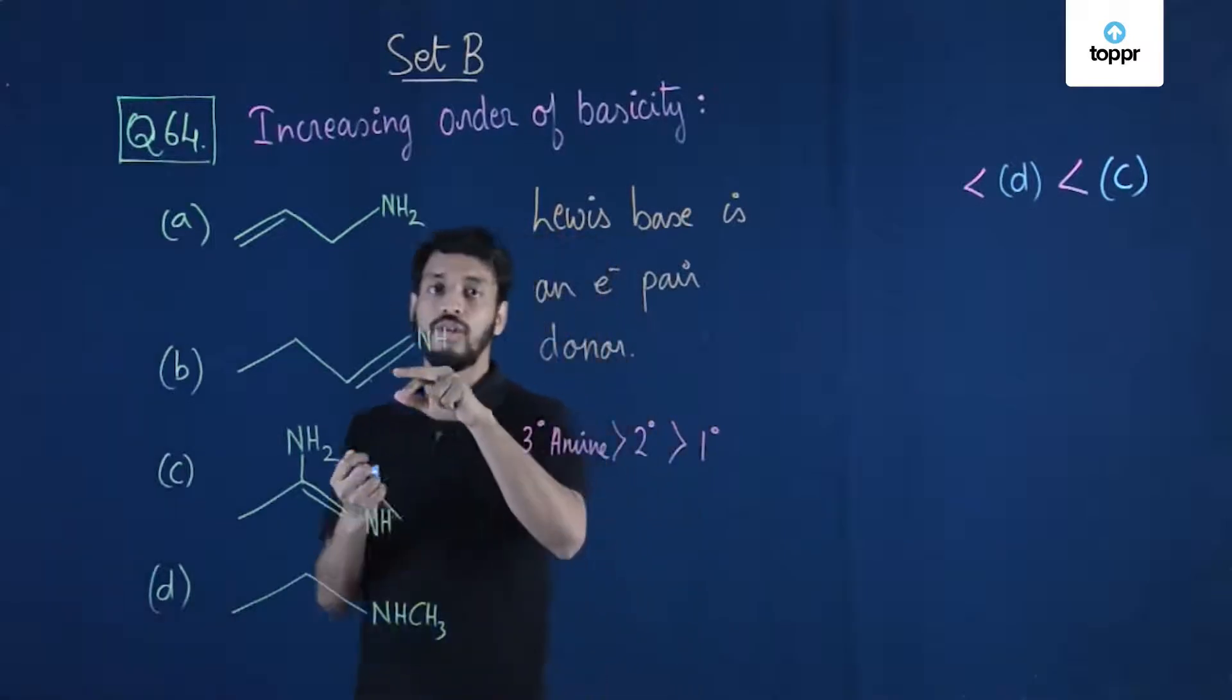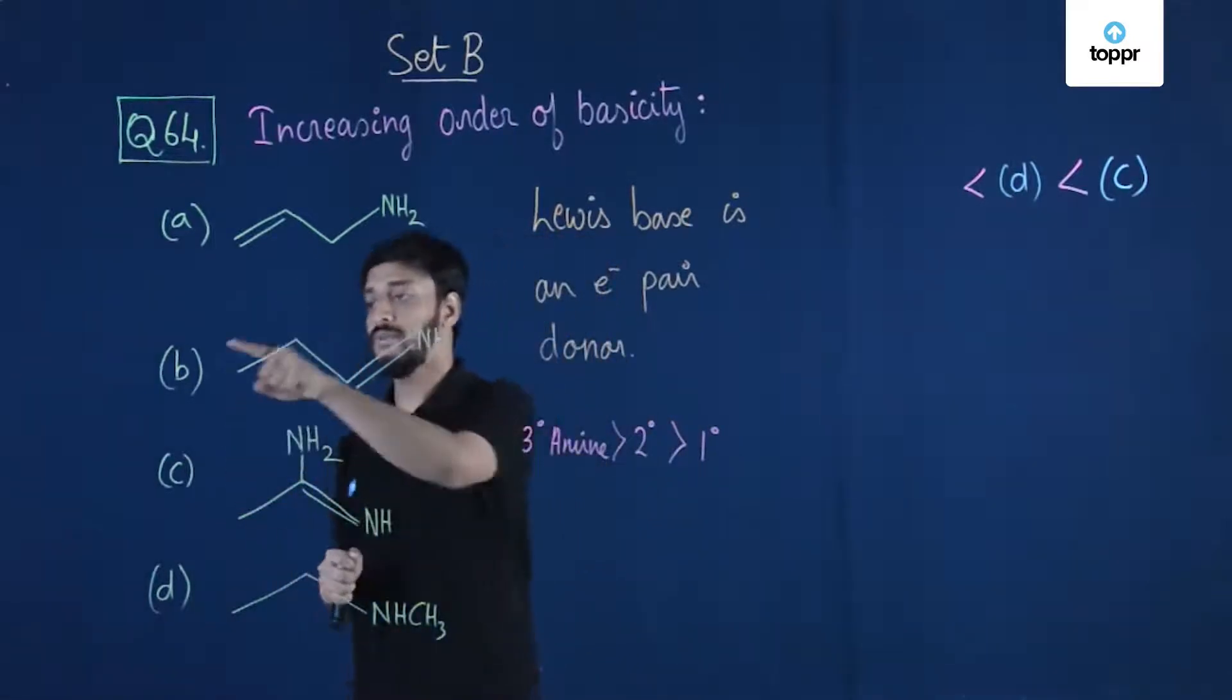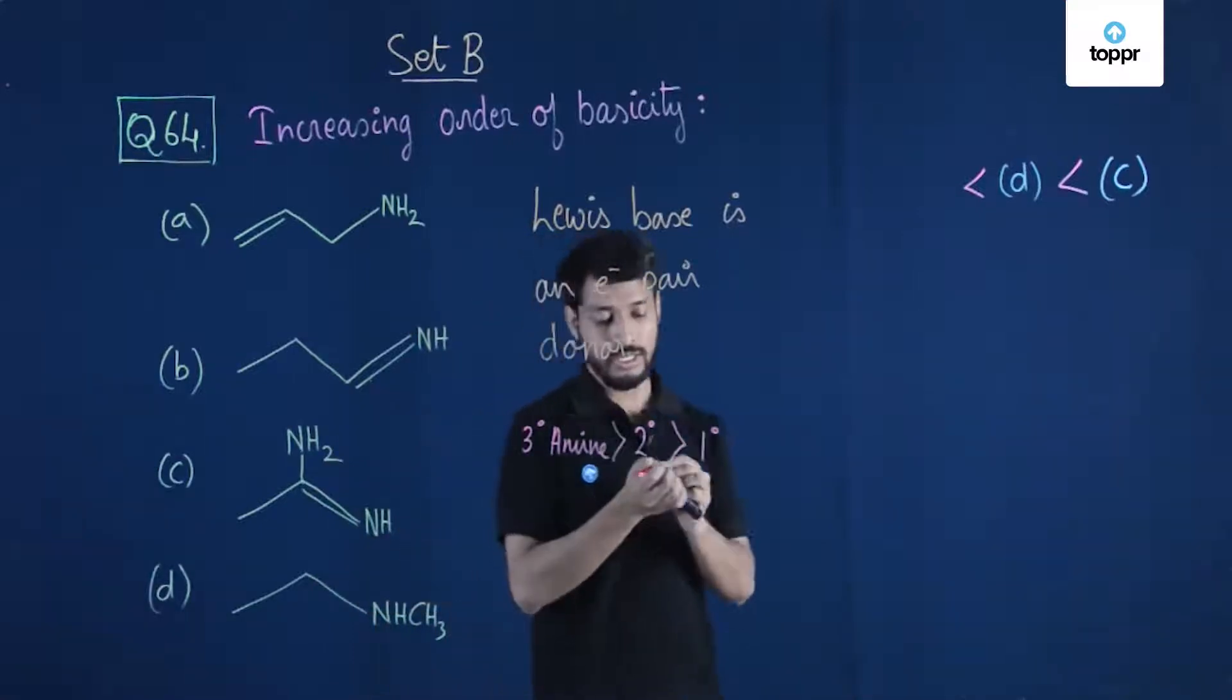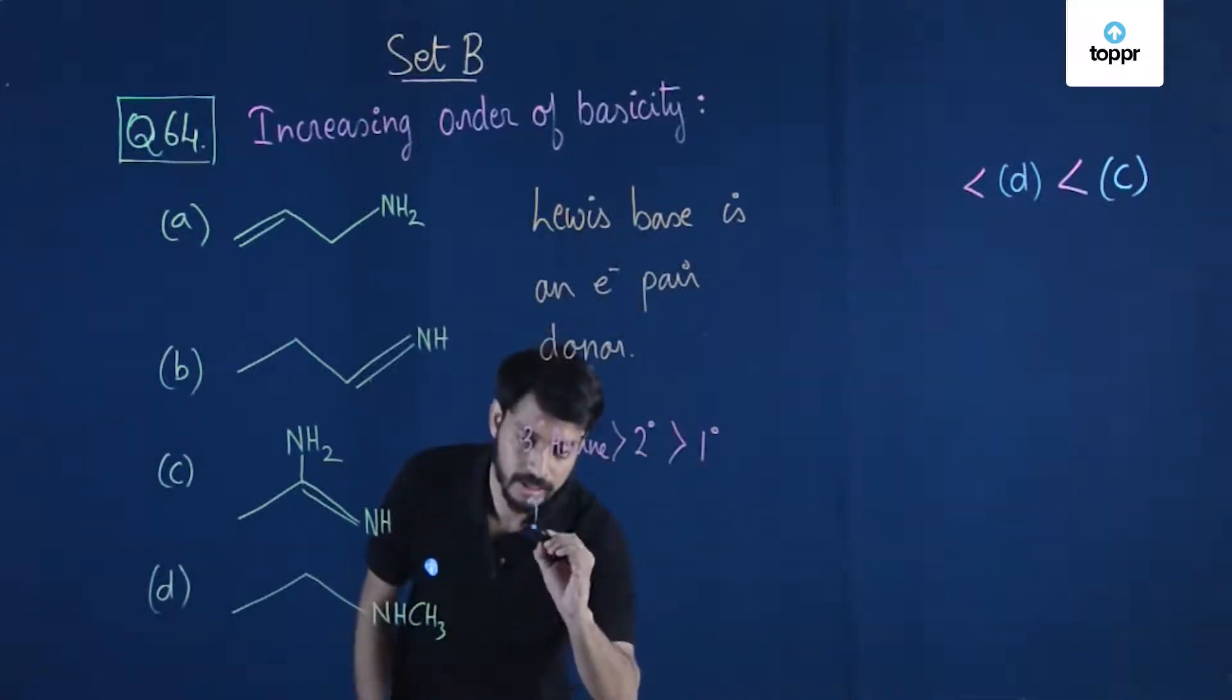From these two we can easily see that B is the compound which has a double bond. Right? And we know in a double bond...